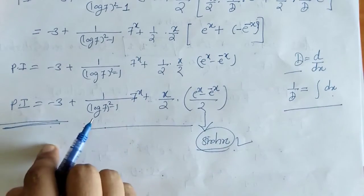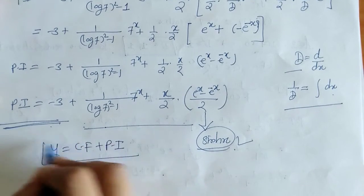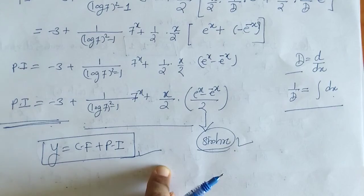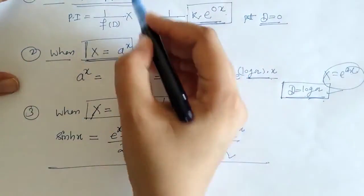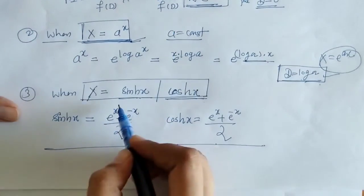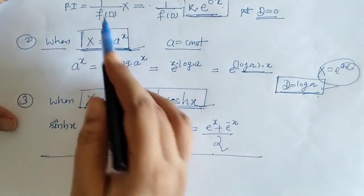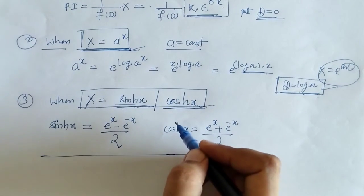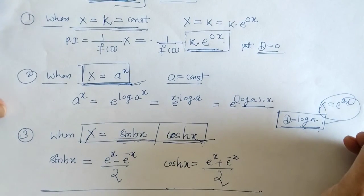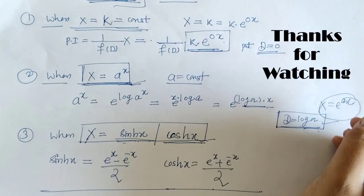So in this way we got the PI for the given differential equation and we can write down its solution as y = CF + PI. When X is a constant, a raised to x form, or hyperbolic sine or cosine, we write all of these in exponential form so that we can apply the rule of particular integral. In this way we have found the particular integral for the exponential case. That's it for now — see you in the next video. Thank you, keep watching.